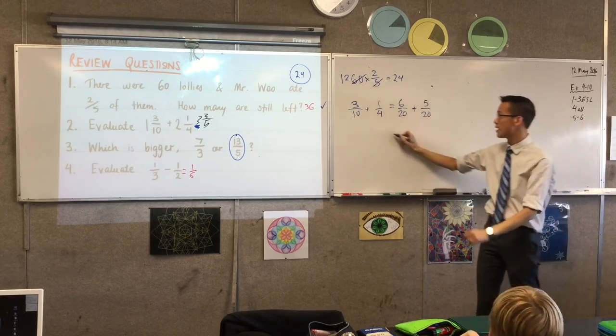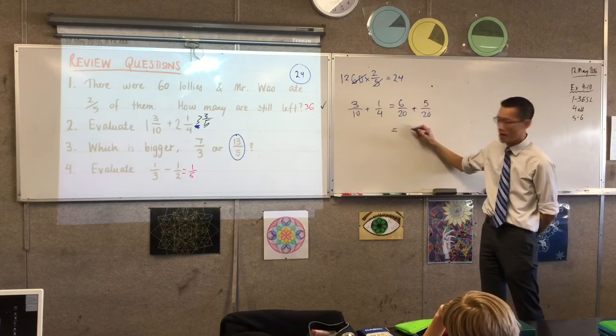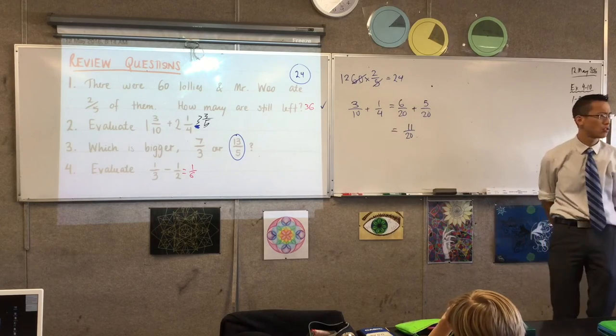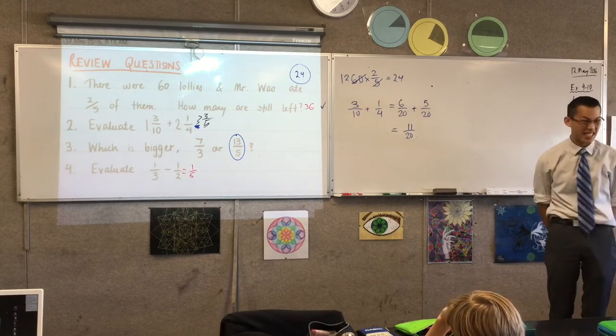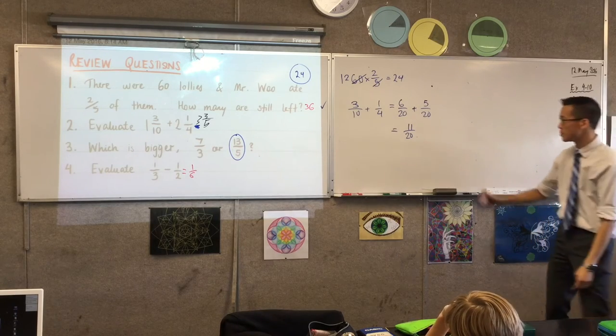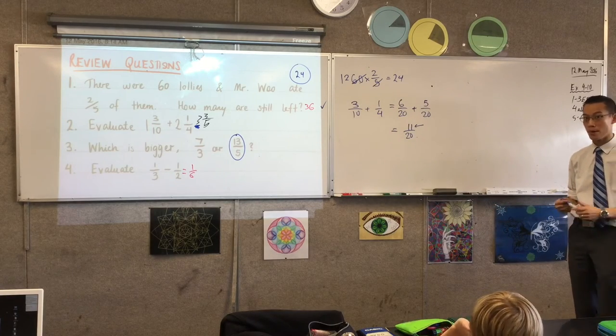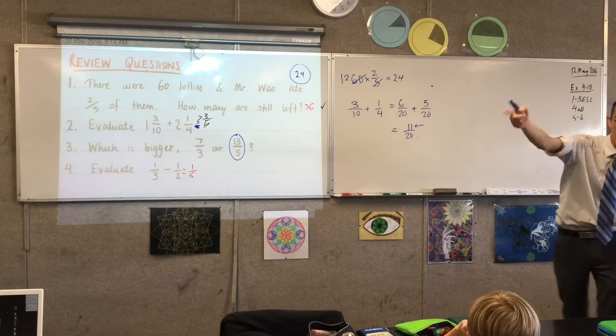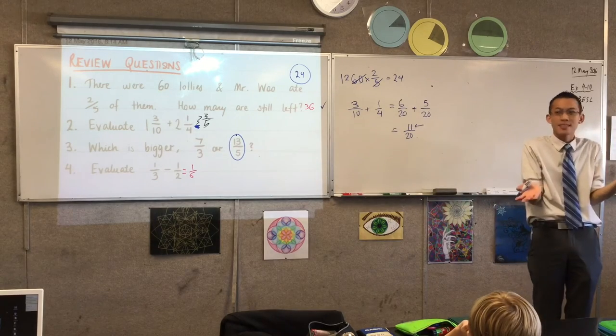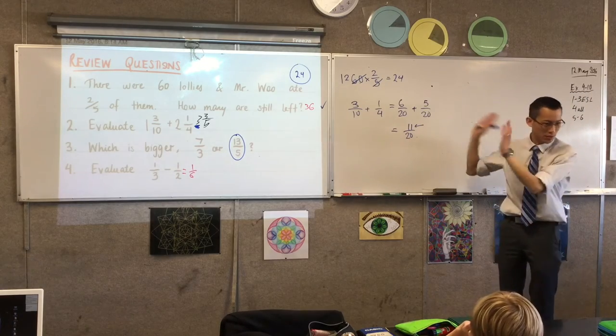So this looks perfect. Common denominator. What's that equal to? 11 over 20. Very good. 6 plus 5, and the denominators stay put. Can we simplify this fraction at all? No. It's kind of stuck, isn't it? In fact, one of the reasons why you know you can't simplify it is because 11 is a special kind of number we looked at in the whole numbers topic. Does anyone remember? Starts with a P. It's prime.